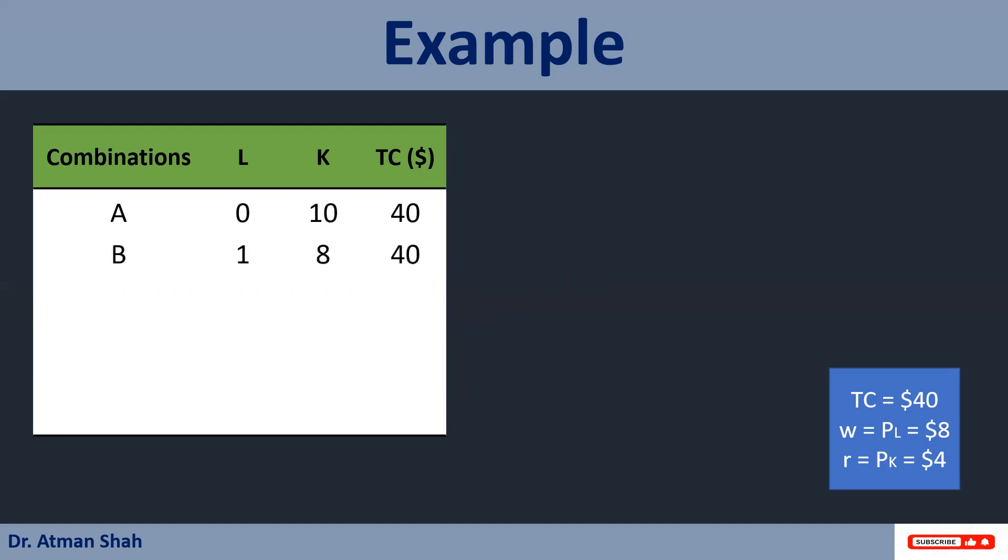Now if producer purchases one unit of labor, that means $8 are spent on labor. So remaining $32 can be spent on capital and out of the $32 producer can purchase eight units of capital. If producer purchases two units of labor then $16 are spent on labor. So from the remaining amount producer can purchase six units of capital.